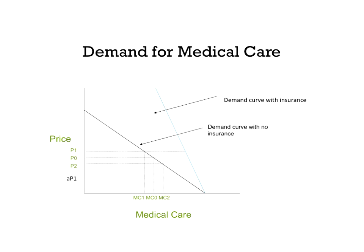We moved from a world with no insurance to a world with insurance. We think about insurance on this graph using the coinsurance rate. Coinsurance means for a given service there's a price, insurance covers some part, and the patient pays some other part — the coinsured part. In the graph, A represents the coinsurance rate: A times P1 is what the patient pays out of pocket. A is a number between 0 — meaning the patient pays nothing — and 1, meaning the patient pays the full price.